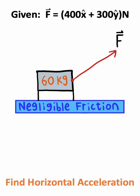The dresser problem. We have a 60 kilogram dresser with this force vector applied to it. What is the horizontal acceleration of the dresser?